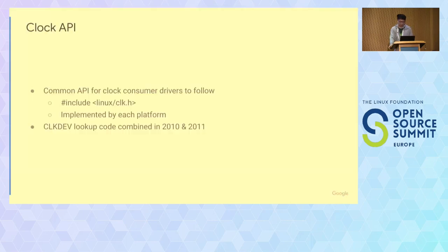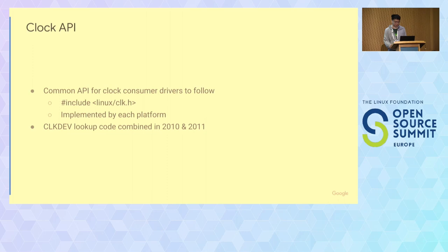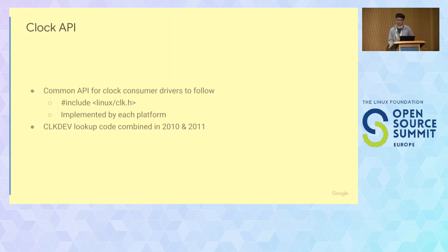Some background. Back in the day, every platform would implement their own resource management and everyone would have their own APIs. Some developers came up with a common API for drivers to use — this is the clock API. You use it by including linux/clk.h and this only specifies an API. The actual code backing this is implemented by each platform under their own machine drivers. Then later on there was clock dev lookup code which gave you some sort of API to look up clock resources.